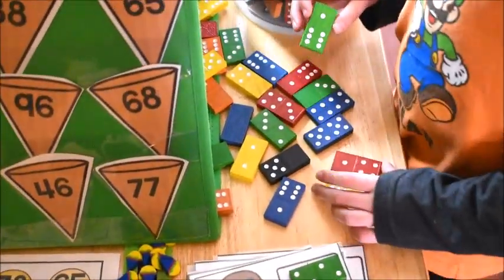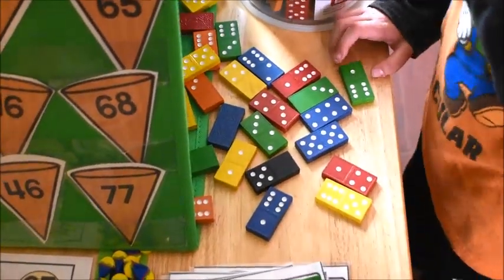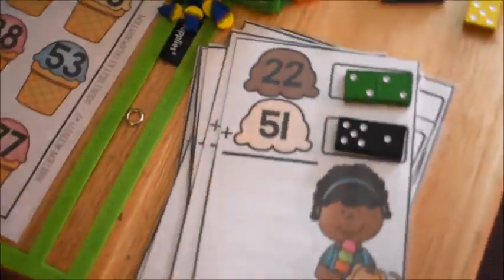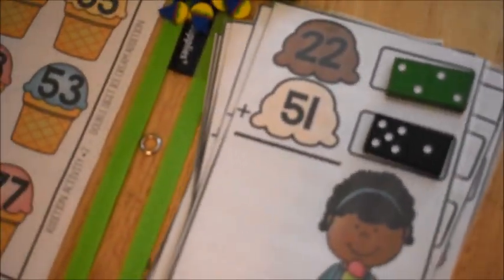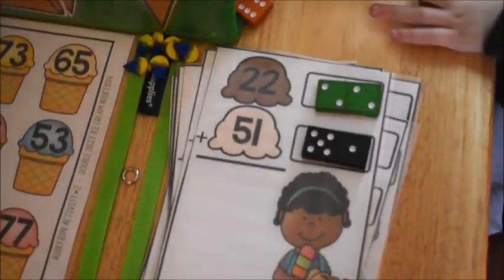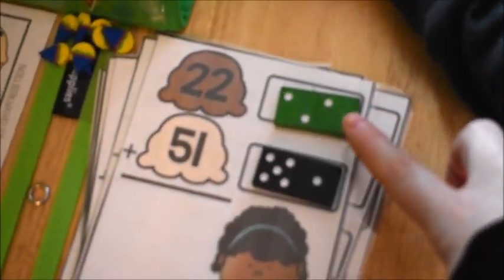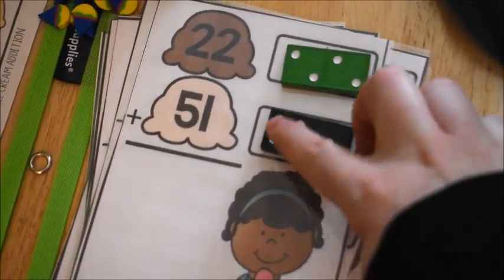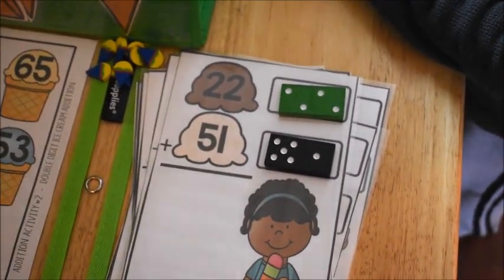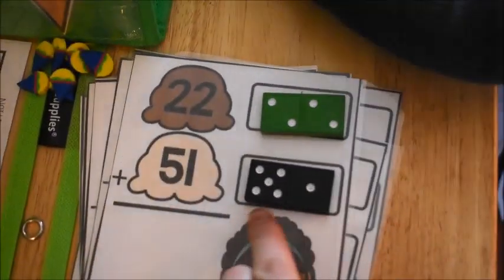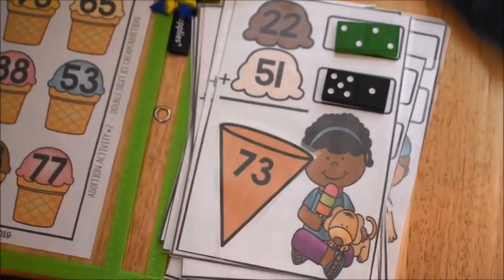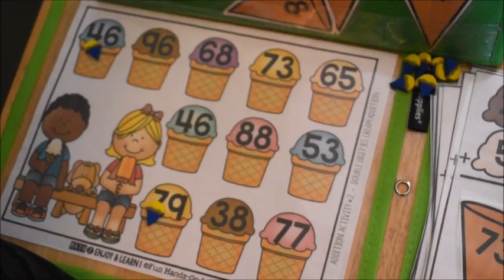As you have seen, this activity is an addition activity, and it had a few steps that he had to follow. He had to look at the numbers on the ice cream cones. He could use his dominoes to help him add, and then he would find the ice cream cone that matched with the right answer. The final step was to find that answer on his mat and cover it up. So once he had his entire mat covered up, he knew he was complete. We used little ice cream cone erasers, which made it extra fun.